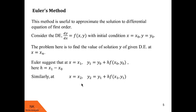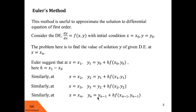Similarly, the value at x = x3 is y3 = y2 + h·f(x2, y2). We continue this process of calculating the solution at various x points until we reach x = xn. At x = xn the value of y is given by: yn = y(n−1) + h·f(x(n−1), y(n−1)).